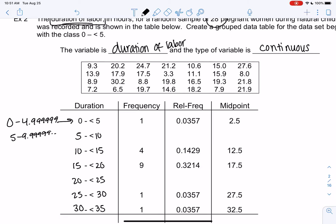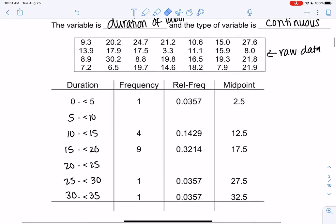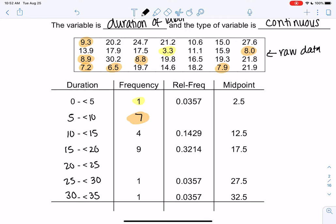So through less than means we get almost to that last number but we don't quite make it. If I saw the number five in my raw data, five would go in this group. Let's count frequencies and then do relative frequency. I'll color code it. Zero through five, I only found one, someone who had a labor of only 3.3 hours. Five through ten, so six point five, seven point two, eight point nine, nine point three, eight point eight, seven point nine, and eight. Looks like I got seven.